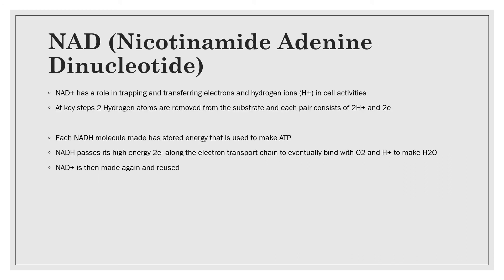Nicotinamide adenine dinucleotide (NAD) has a role in trapping and transferring electrons and hydrogen ions. At key steps, two hydrogen atoms are removed from the substrate — each pair consists of 2H⁺ and 2e⁻. Each NADH molecule stores energy used to make ATP. NADH passes its high-energy electrons along the electron transport chain to eventually bind with O₂ and H⁺ to make H₂O, and NAD⁺ is then regenerated for reuse.